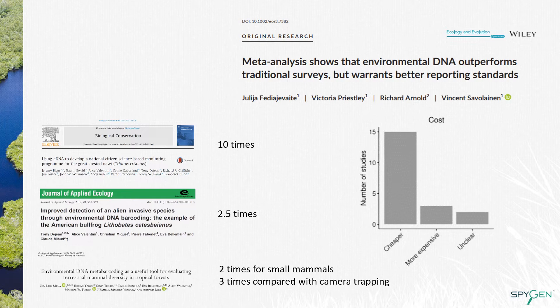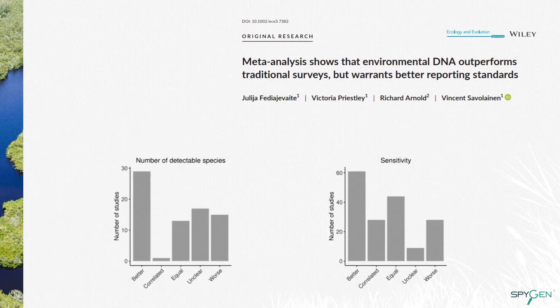In France, for the detection of American bullfrog, eDNA is 2.5 times cheaper. In tropical forests, for evaluating terrestrial mammal diversity, the use of eDNA is 2 times cheaper for small mammals and 3 times cheaper compared with camera trapping. In most cases, the species detected and the sensitivity were equal or higher using eDNA than traditional methods.